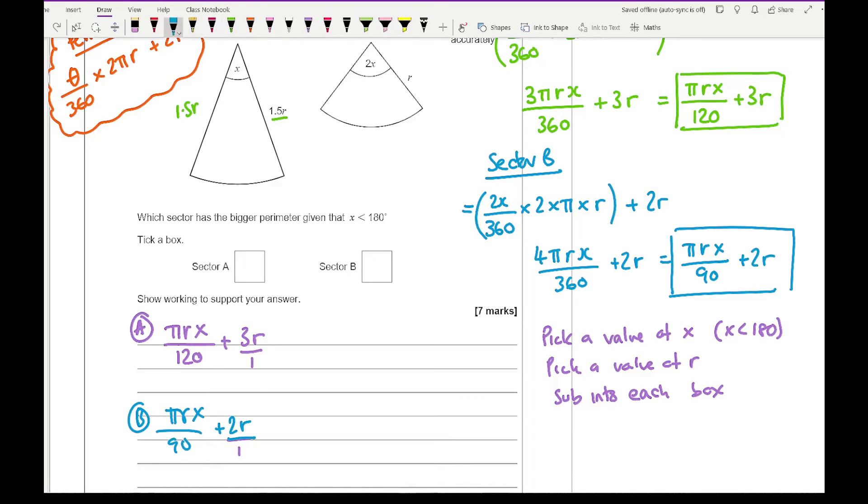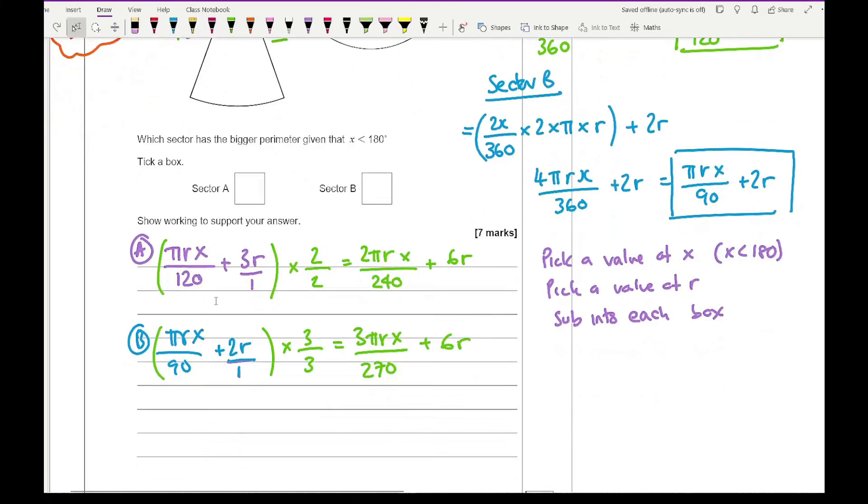If I multiply A by 2 over 2 and multiply B by 3 over 3, technically I'm just multiplying by 1, I'm not going to change the value, just change the numbers and find the equivalent fraction. This becomes 2 pi r x over 240 plus 6r, and this is going to become 3 pi r x over 270 plus 6r.